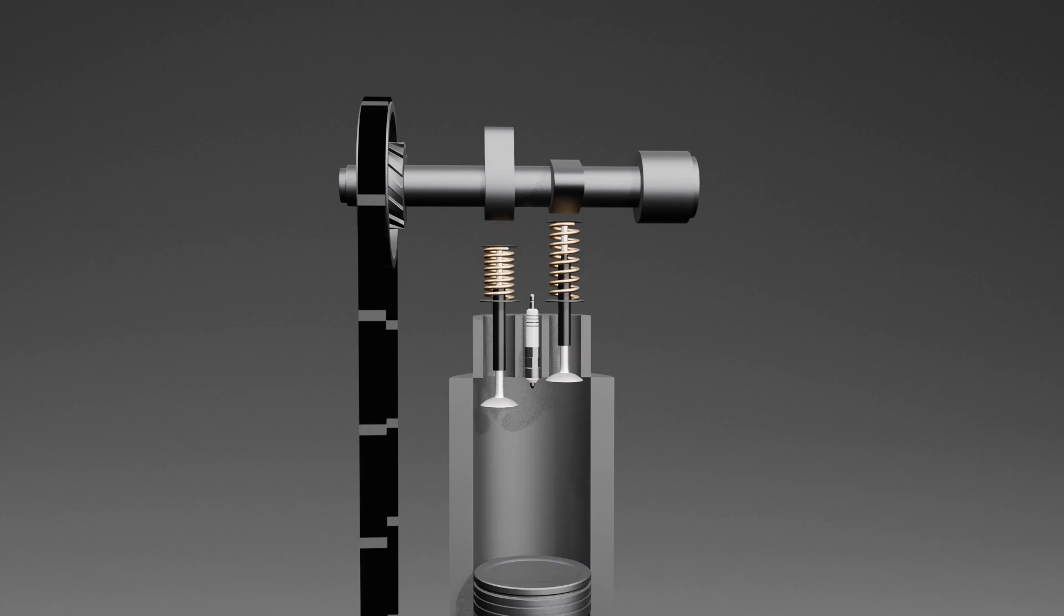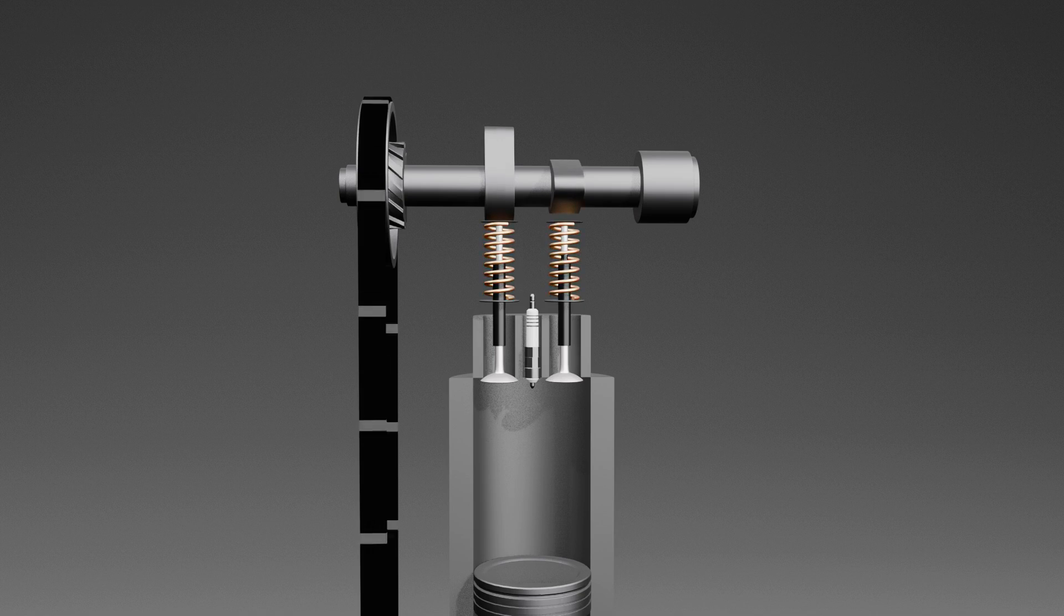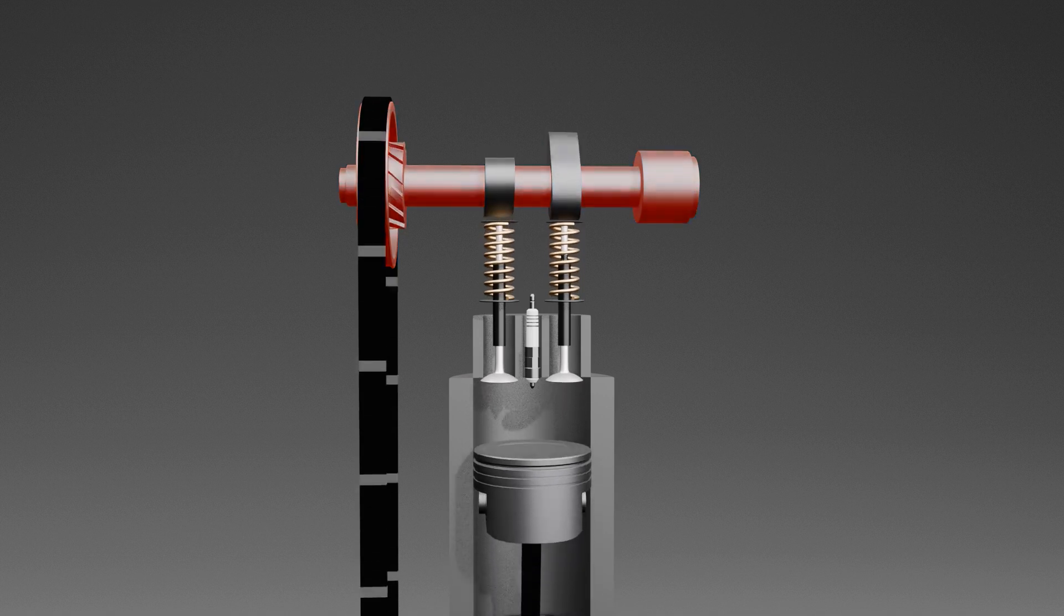The intake valve opens to allow air and fuel mixture into the engine. The exhaust valve opens to release waste gases from the engine. Both valves are kept closed by springs and are opened by cams that push the springs down as the camshaft rotates.